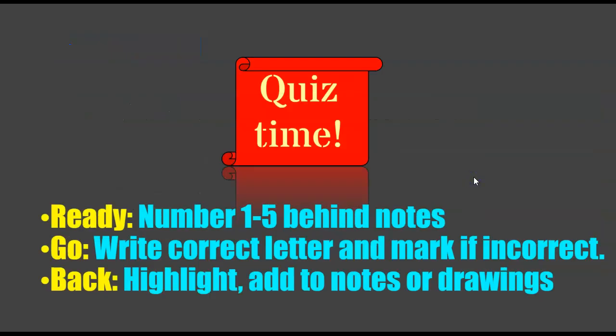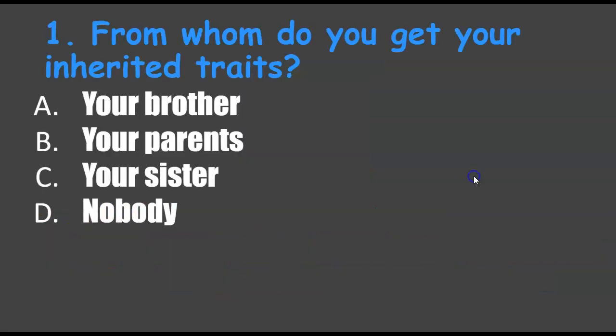Quiz time — heredity quiz one, questions one through five. Number one: from whom do you get your inherited traits? Brother, parents, sister, or nobody? You get them from your parents.